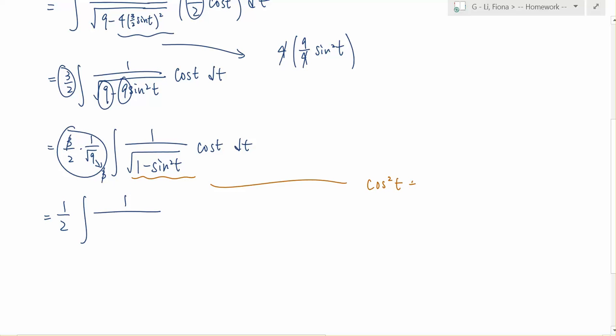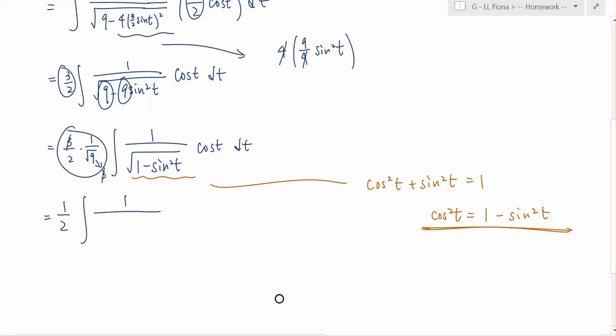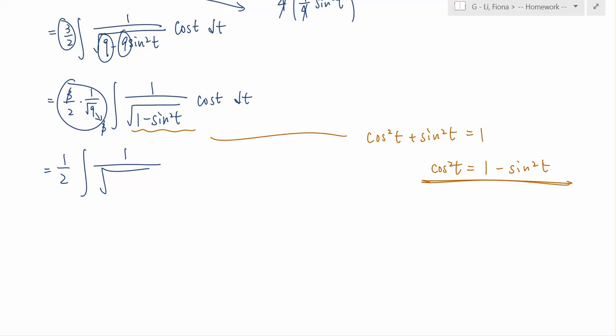So as you can remember, this part is cosine squared t plus sine squared t equals to 1. This is our identity. And so cosine squared t will be equals to 1 minus sine squared t. And so if we can recall this identity, then we can say that 1 minus sine squared t is equals to cosine squared t times cosine t dt.